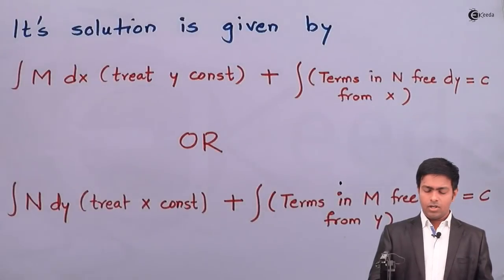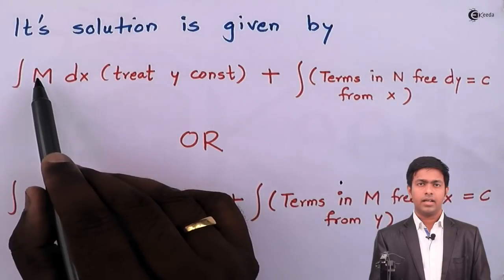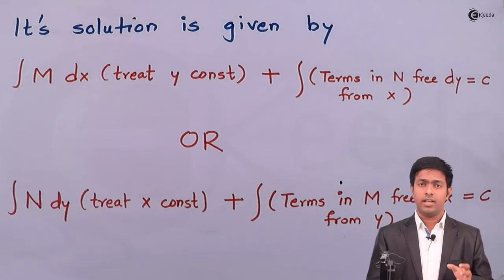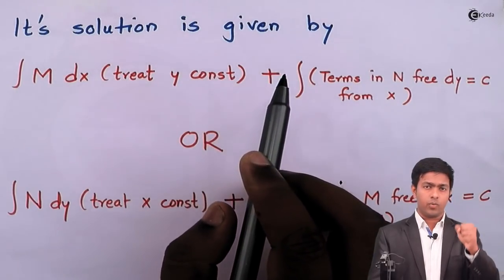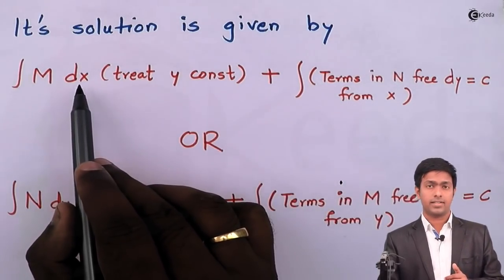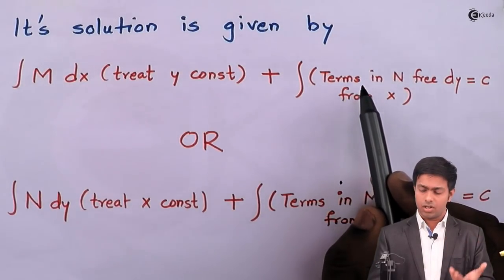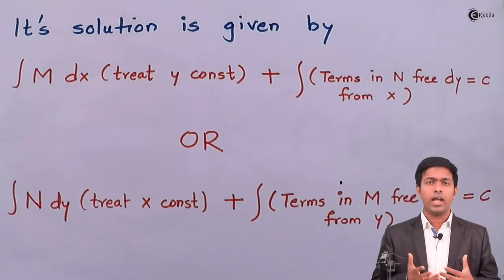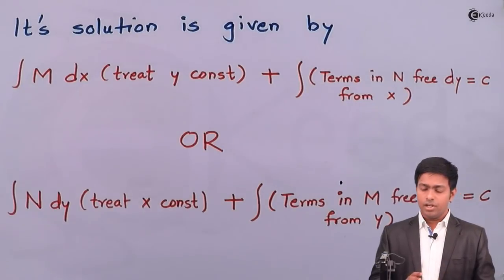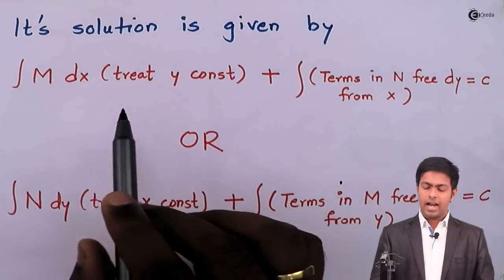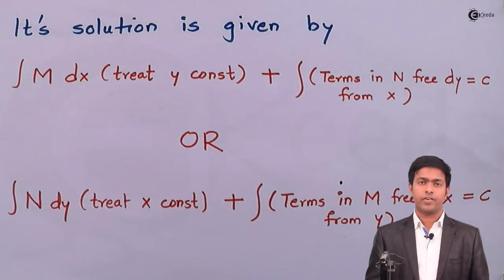The first solution format is: the integration of M dx, where we treat y as constant — meaning we integrate only the terms containing x with respect to x — plus the integration of N, but taking only the terms in N that are free from x (i.e., terms containing only y), integrated with respect to y, equals C. This gives us the solution.